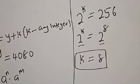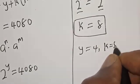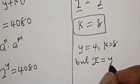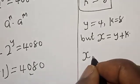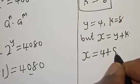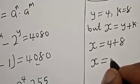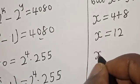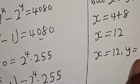We've got y equal to 4 and k equal to 8. Since x equals y plus k, x equals 4 plus 8, which gives x equal to 12. Therefore, our final answers are x equal to 12 and y equal to 4.